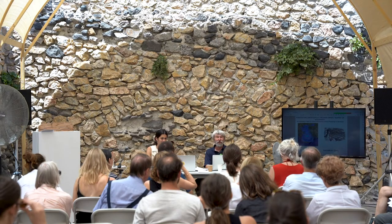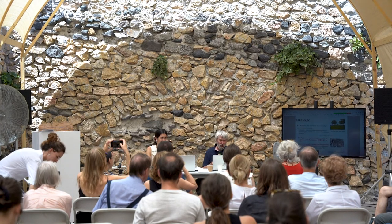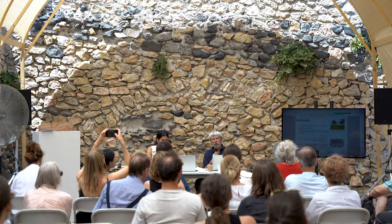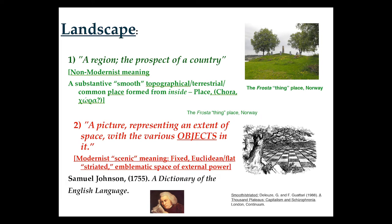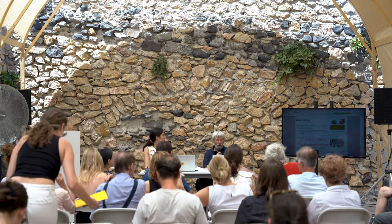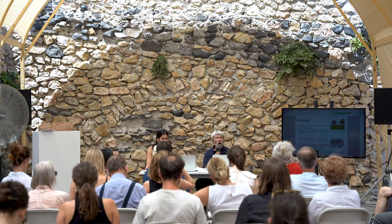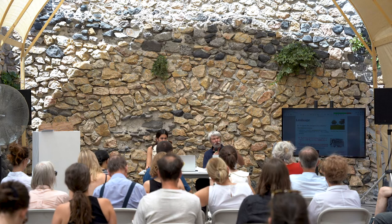Samuel Johnson in 1755 produced the first decent English dictionary and he was interested in landscape and choreography in these sites — he actually knew what he was writing about. The non-modernist meaning — that is, prior to modernism, which I think is an ideology — was a region, the prospect of a country. You've all been talking about land as if it was what we're walking on, but originally it was an area, a region, or a prospect — a visual description of that area.